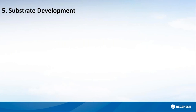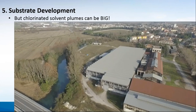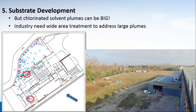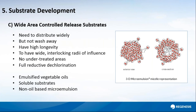These products have remediated thousands of sites, but they are low-volume products and chlorinated solvent sites can be very large. For example, we have a site just north of Venice — a six-hectare site with about 20,000 metres squared impacted with chlorinated solvents. To get interlocking radii of influence with the original substrates, you would need to inject on a two or three metre grid — meaning thousands of injection points across a site of this size, which makes it expensive.